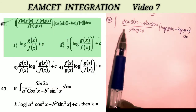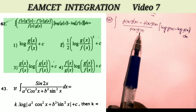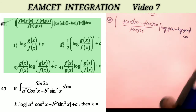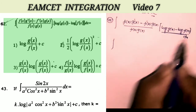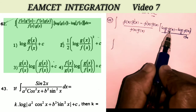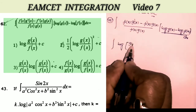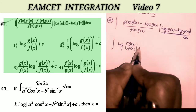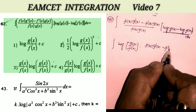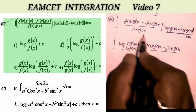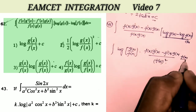Sum number 42: integral of [f(x) · g'(x) − f'(x) · g(x)] / [f(x) · g(x) · (log g(x) − log f(x))] dx. First I note that log g(x) − log f(x) = log(g(x)/f(x)). I rewrite the denominator as f(x)² · (f(x)/g(x)).